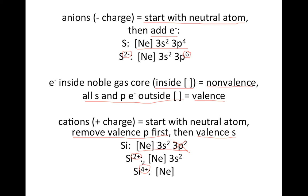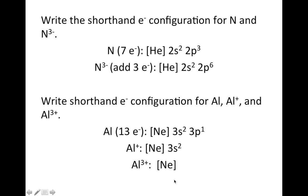If you then want to make it 4+, you got to remove two more, and at that point you can remove the 3S as well. So you end up with Si⁴⁺ being just [Ne] in brackets.